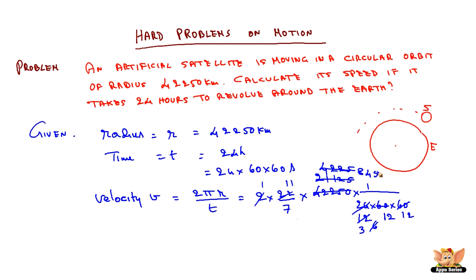So basically we get 11 into 845 and 7 into 3 into 12 into 12 into 12 in the denominator which is nothing but when we multiply and divide. So the velocity of the satellite we get 3.07 km per second. So the velocity of the satellite is 3.07 km per second.